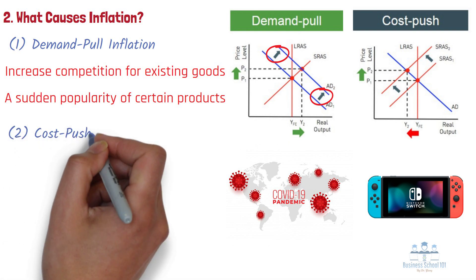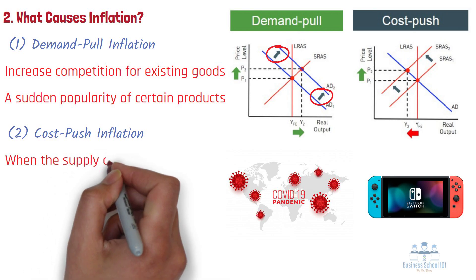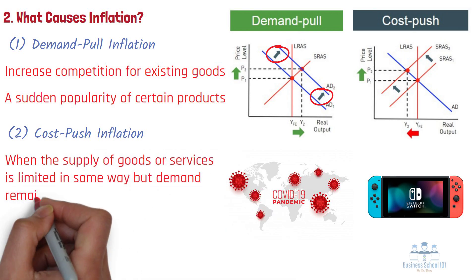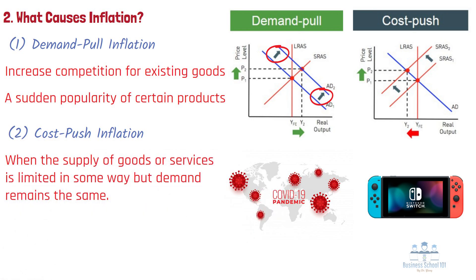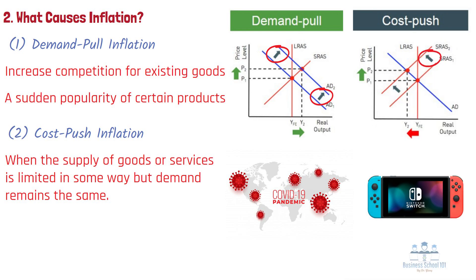Second, cost-push inflation is when the supply of goods or services is limited in some way but demand remains the same, pushing up prices. Usually, some sort of external event, like a natural disaster, hinders companies' abilities to produce enough of certain goods to keep up with consumer demand. This allows them to raise prices, resulting in inflation.